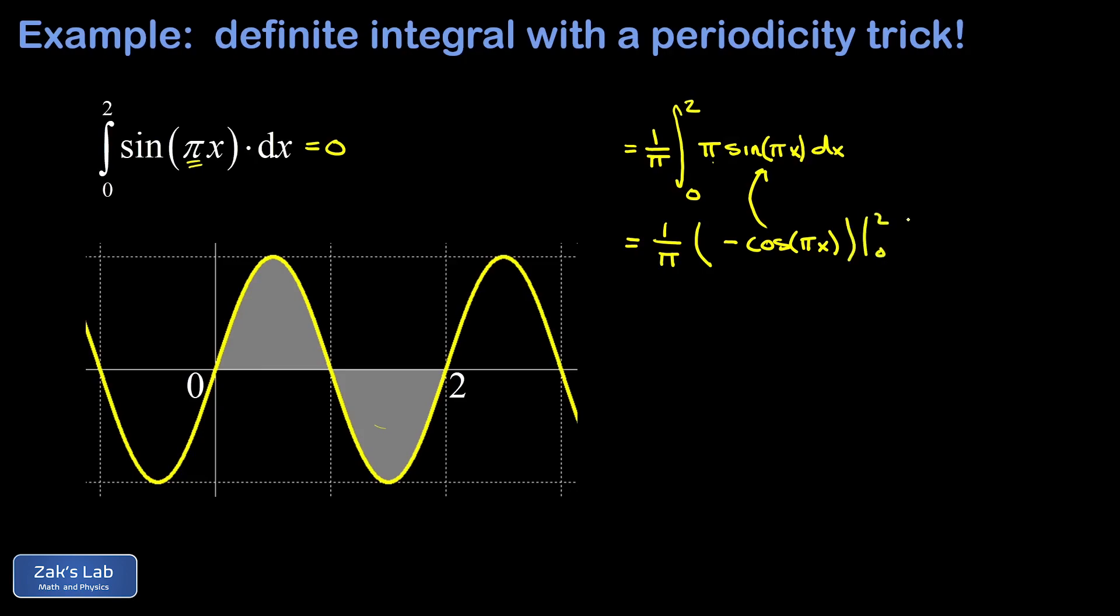Okay, so we're going to evaluate this thing from 0 to 2. And so I have a 1 over pi and then a negative cosine of 2 pi. And then we subtract the lower limit there, so we get a plus cosine of 0.